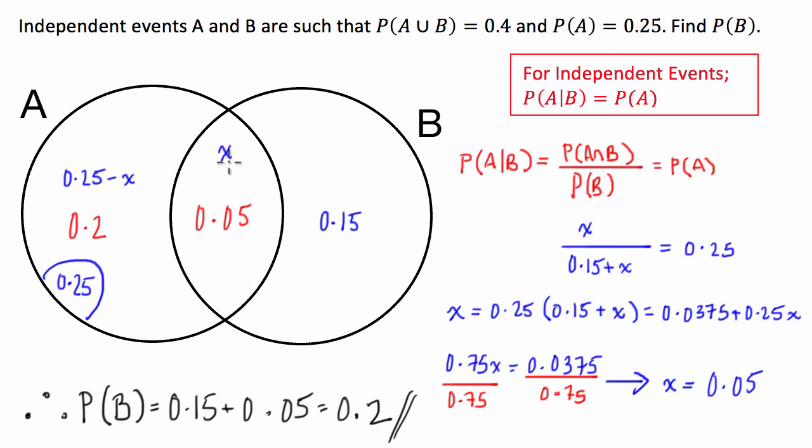So there you have it. What we did here is, first of all, when I get a question like this, I always like to draw a Venn diagram. It makes everything a lot easier to set out and a lot easier to visualize what you have to do. What I then did is I used the fact that these are independent events to set up this formula here. And from this formula, I then just substituted in the information that we were given. Once I'd done that, it was just a case of not screwing up the algebra. And then we were home and hosed with the probability of B equaling 0.2.